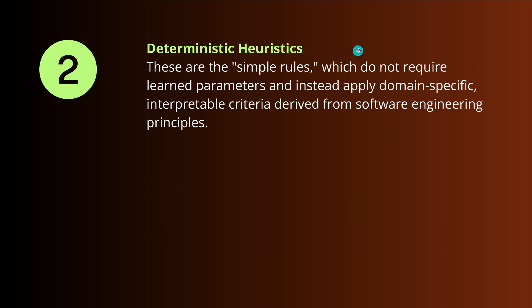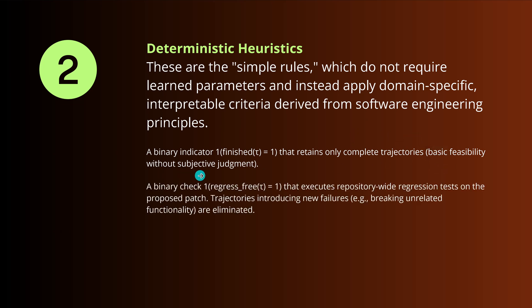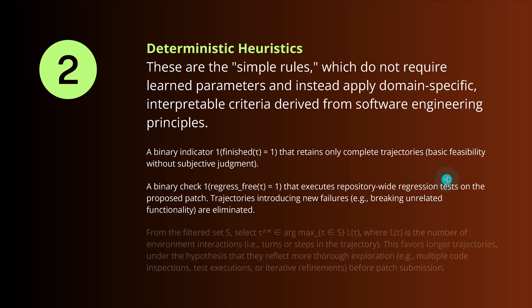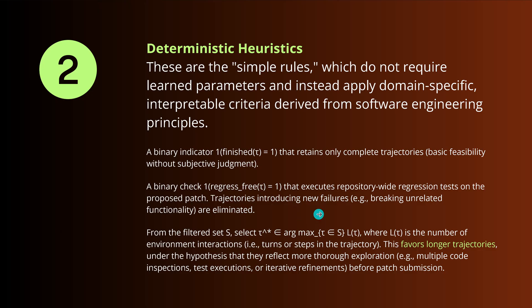The second part with the deterministic heuristic with the simple rule part is not as easy. So no learned parameter. Instead, we apply domain specific criteria catalog derived from software engineering principles, what you want to achieve. In the simplest case, they go with a binary indicator that says, hey, we only go with complete trajectories. Well, of course, second, also a binary check that executes a repo wide regression test on the proposed patch. And then they have a filter set with the argmax function. They say, interestingly, we want to favor longer trajectories under the hypothesis that they reflect more thorough explorations or multiple code inspection test execution or other iterative refinements before the patch submission itself.